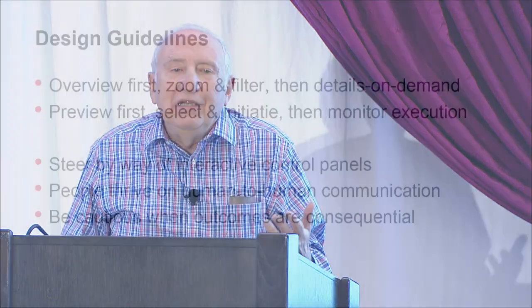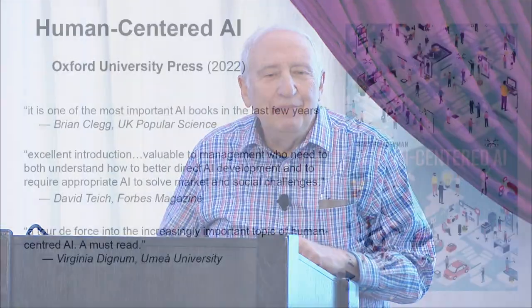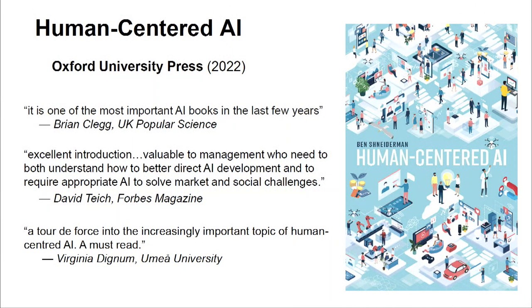The summary: our language, metaphors, and visual imagery need to change. Design guidelines include overviews first, zoom and filter, then details on demand, previews, allowing users to select and initiate, monitor execution, and change course — you're not locked in. As with GPS navigation, if you want to take a side route, you can, and get back on the road. It's all in my book, Human-Centered AI.